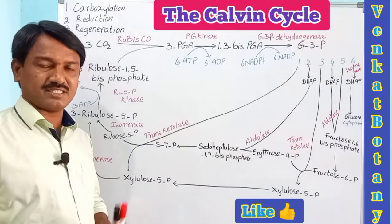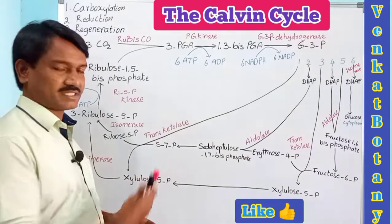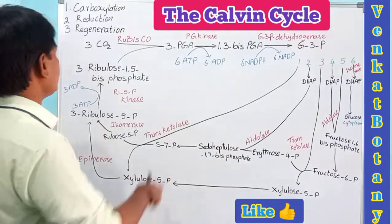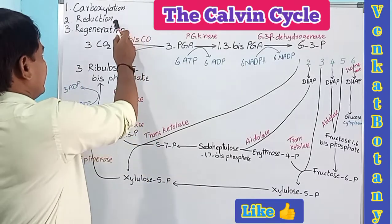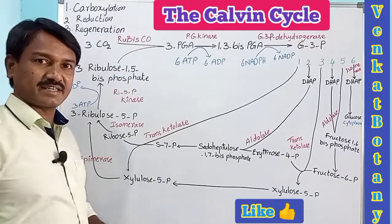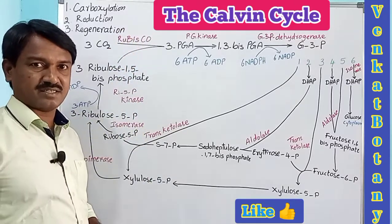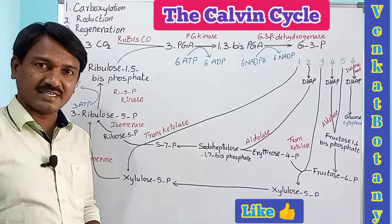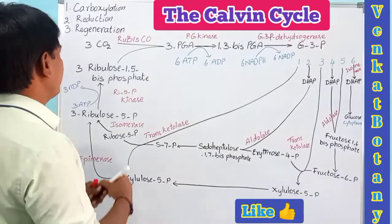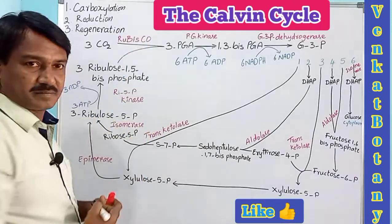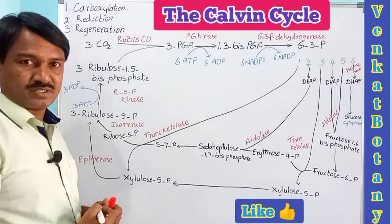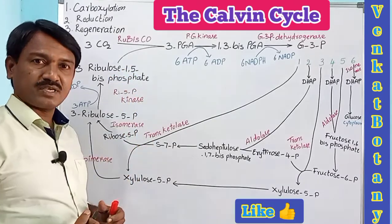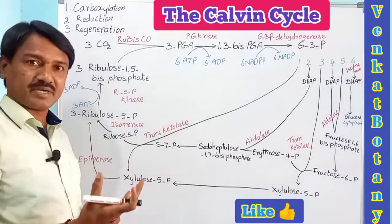In the Calvin cycle, there are three main steps: carboxylation, reduction, and regeneration. The main step is carboxylation.